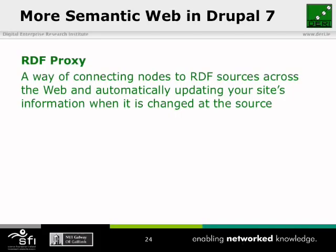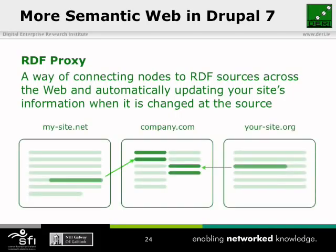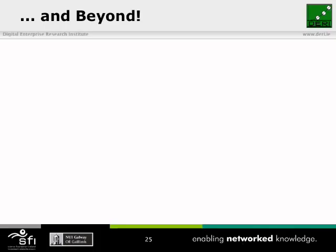There's also RDF Proxy, which is a way of connecting nodes to RDF sources across the web and automatically updating site information whenever that content across the web is changed. This is like the example from the benefits of the semantic web: if you had a site and I had a site and we worked for the same company, our company could use RDF Proxy to get information from our sites like our bio and contact information, and whenever we updated it on our sites, it would also be updated on the company site without anyone having to ask if we've changed anything.